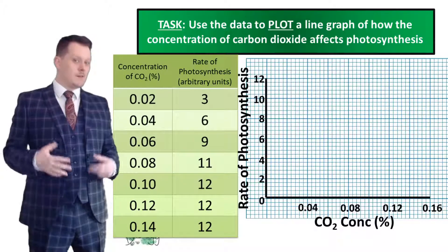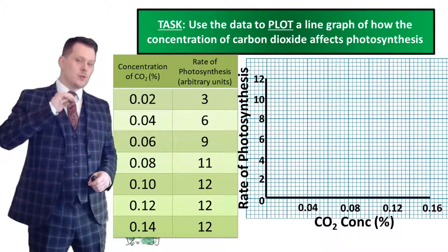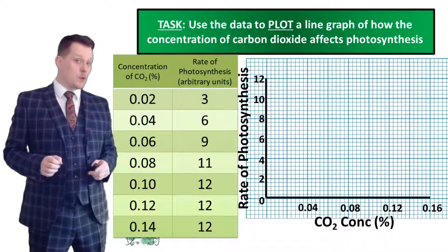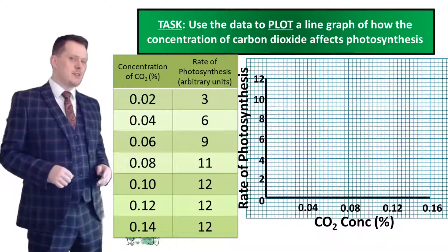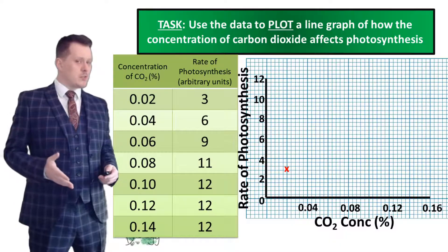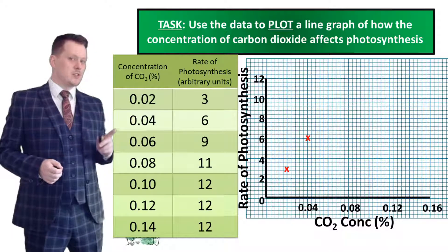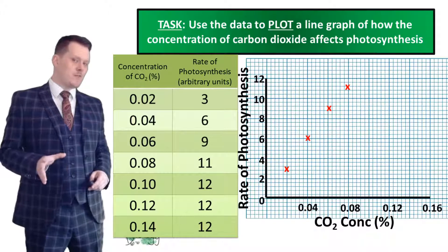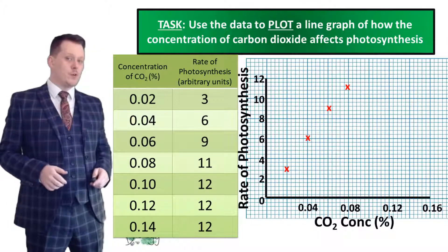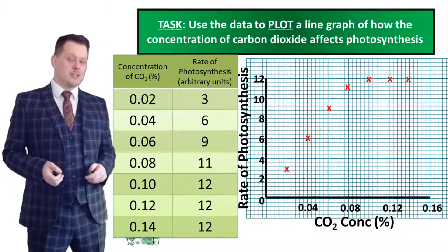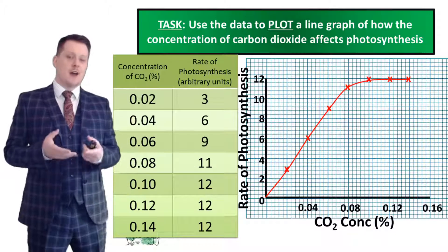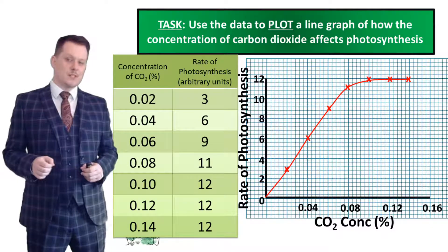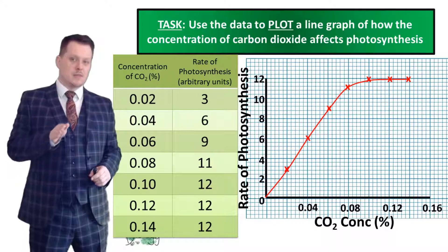For my graph I've started at zero for the rate of photosynthesis and gone up in twos from zero to twelve. For the concentration of CO2 I've gone up in 0.04% increments up to 0.16%. Plotting my points: 0.02% gives a rate of 3; 0.04% gives 6; 0.06% gives 9; 0.08% gives 11; and 0.10%, 0.12%, and 0.14% all give 12. I've drawn a smooth curve through the points, forcing it through zero, because if there is no CO2 the rate of photosynthesis will be zero.